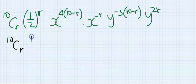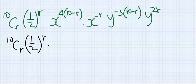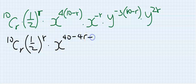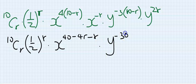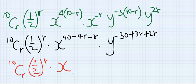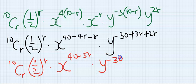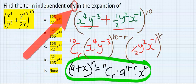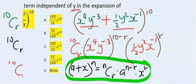This gives us 10 combination r, half to the power of r. Applying the indices, the x power is 40 minus 4r minus r, which is 40 minus 5r. The y power is minus 30 plus 3r plus 2r, which is minus 30 plus 5r. So we have 10 combination r, half to the power of r, x to the power of 40 minus 5r, y to the power of minus 30 plus 5r.